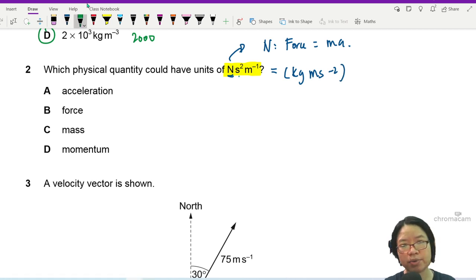Okay, followed by everything at the back, s square m, negative 1. And then I just combine everything together. Meter, this will be kg, meter, meter and meter is gone,